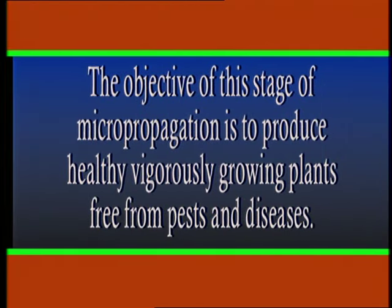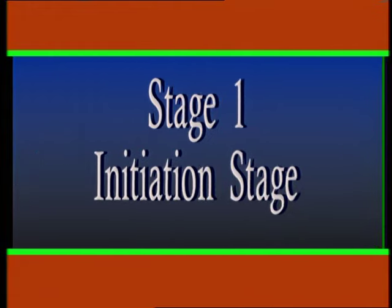To summarize Stage 0: the objective is to produce healthy, vigorously growing plants free from pests and diseases. Now let us look at Stage 1, which is the initiation stage.